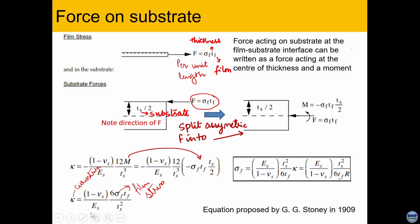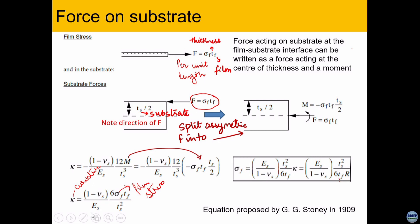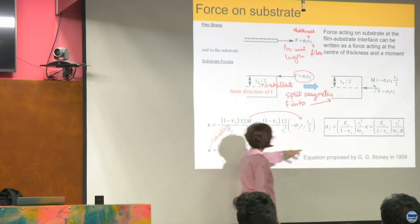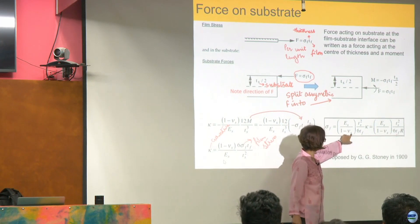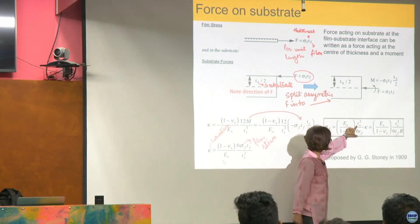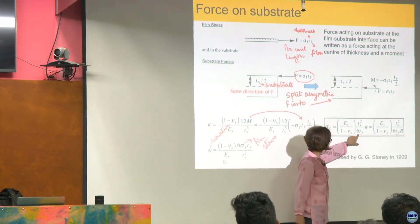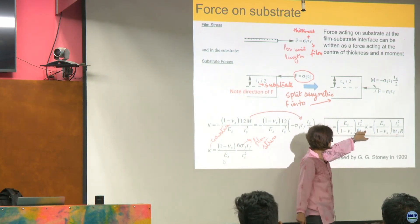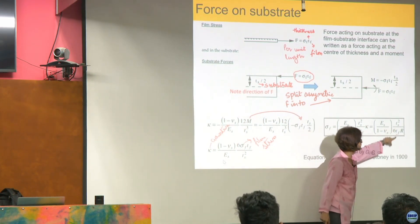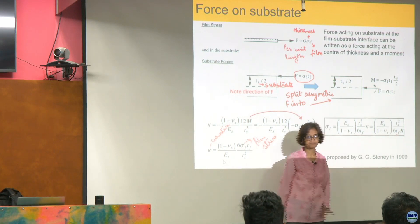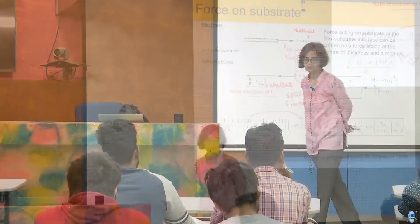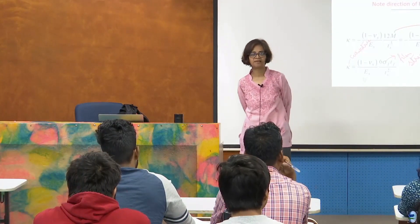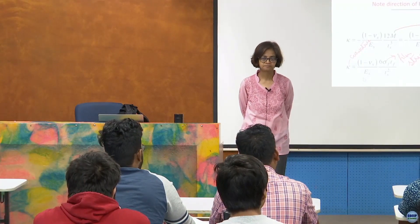This M, when substituted, gives an expression that relates curvature to the elastic properties of the substrate, the stress in the film, the film thickness, and the substrate thickness. That is the famous Stoney's equation: stress in the film equals the biaxial modulus times T_s squared divided by 6 T_f, multiplied by curvature k (or 1/r — just be careful of units, one is in units of length and one in units of length inverse).